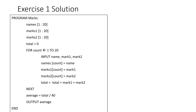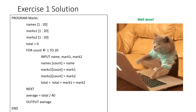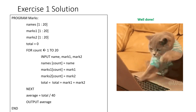The solution: names[1:20], marks1[1:20], marks2[1:20], total = 0. For count = 1 to 20, input name, mark1, mark2. Then names[count] = name, marks1[count] = mark1, marks2[count] = mark2, and total = total + mark1 + mark2, then next. Average = total / 40 — since we've inputted 40 marks in total — then output average and end. If you got that right, well done! Keep practicing your pseudocode and I'll see you next time.